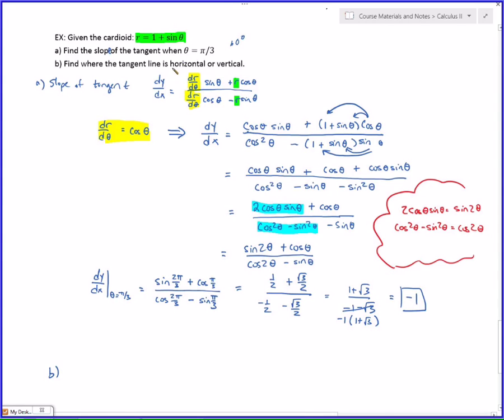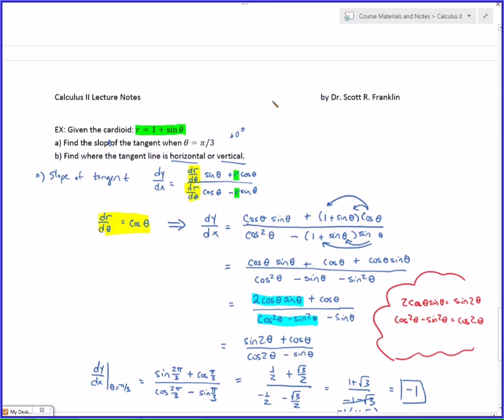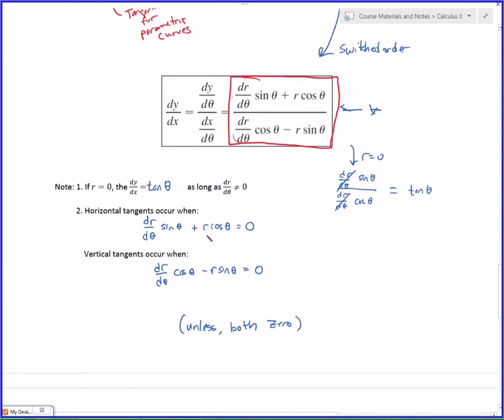Now we want to know where is it horizontal and where is it vertical. There's two ways to do that. You can go back the way that I told you on the previous page and solve this equation for where it's horizontal and this equation for where it's vertical, or you can use the fact that we've already simplified this thing, and we have right here our derivative. That is the slope of the tangent line.